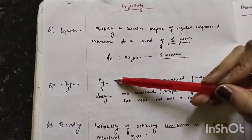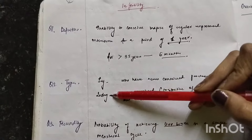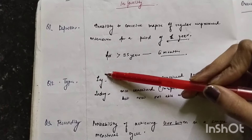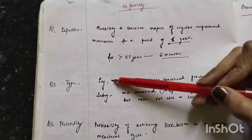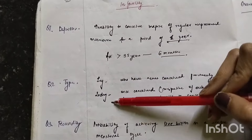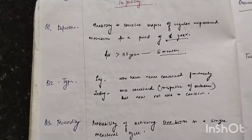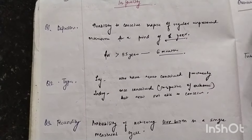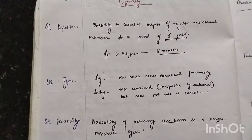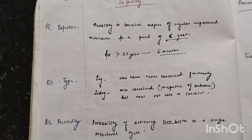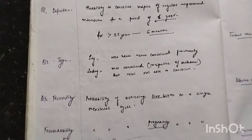Now this infertility can be of two types: primary infertility and secondary infertility. Primary means a woman has never conceived ever in her life before. Secondary means she has conceived earlier, but that did not result in a live birth due to some issues.